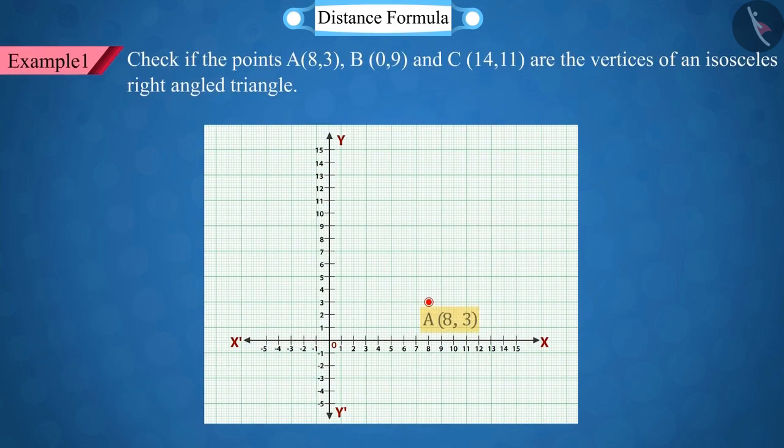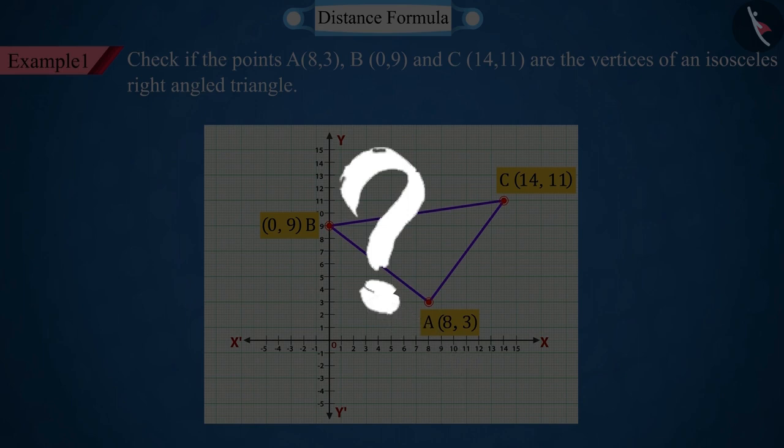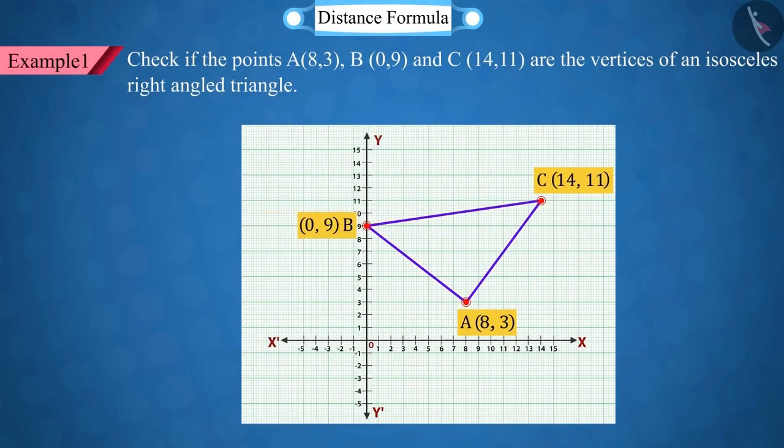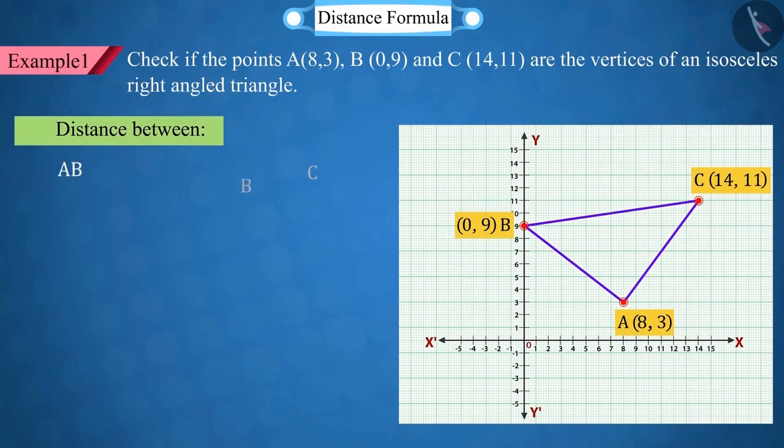Check if point A, point B, and point C are the vertices of an isosceles right-angled triangle. Can you tell us what we need to do? Good. For this, we use the distance formula. Let's find the distances between AB, BC, and CA.